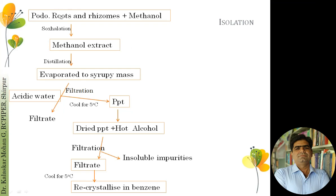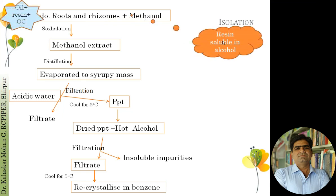The roots and rhizomes are cut into pieces and subjected to extraction using a circulation technique with methanol, since the resins are soluble in alcohol. The roots and rhizomes contain oleoresin along with other chemical constituents. Since methanol is a universal solvent, the methanol extract contains resin along with other chemical constituents.